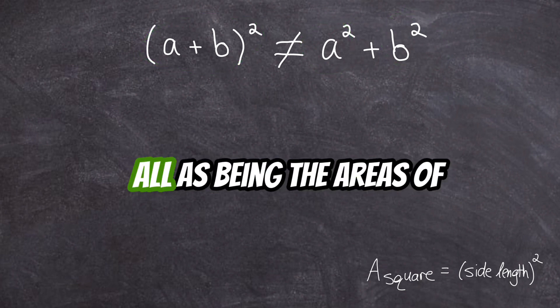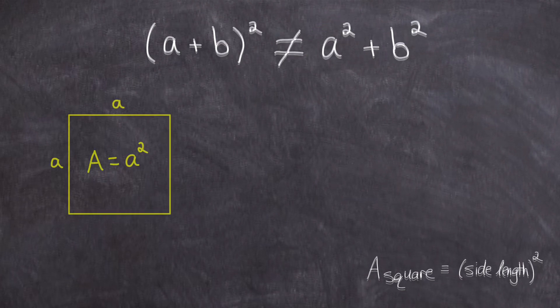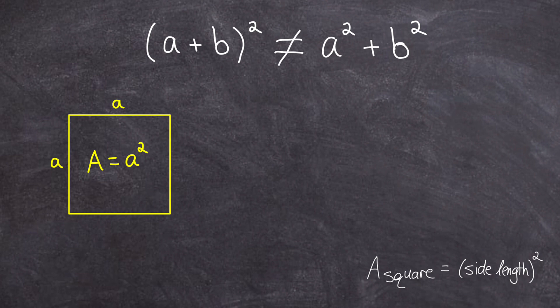We could interpret them all as being the areas of squares. This a squared would just be the area of a square with a side length of a, and this b squared is just the area of a square with a side length of b. And then a plus b all squared would be the area of a square with a side length of a plus b.